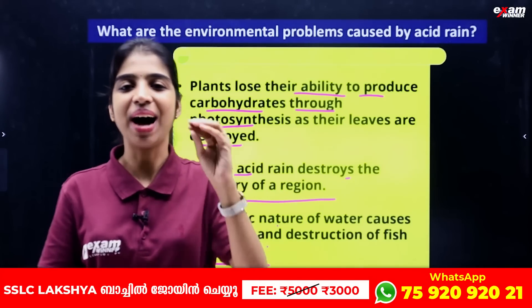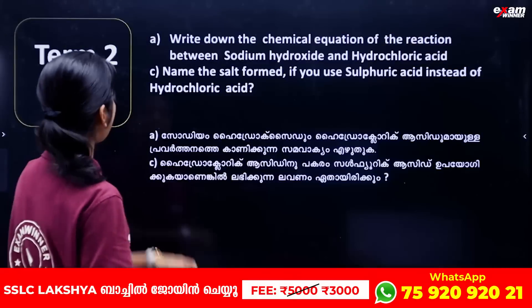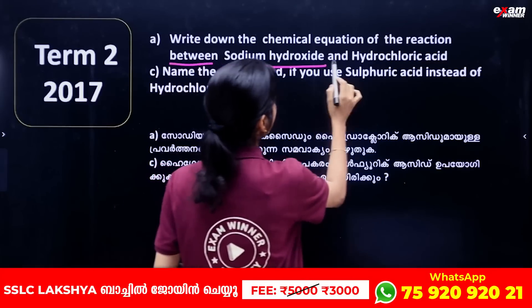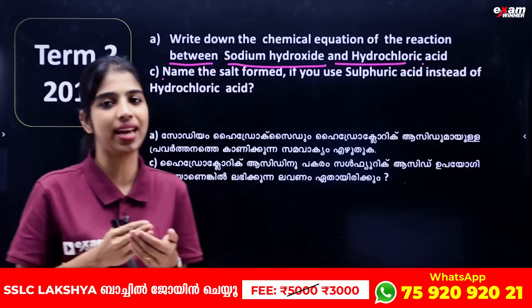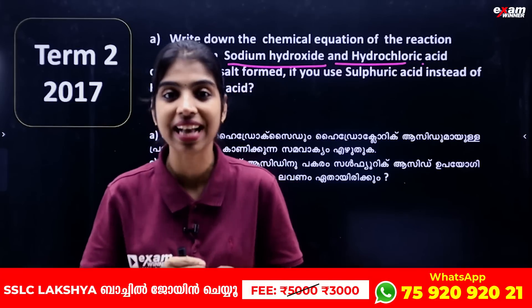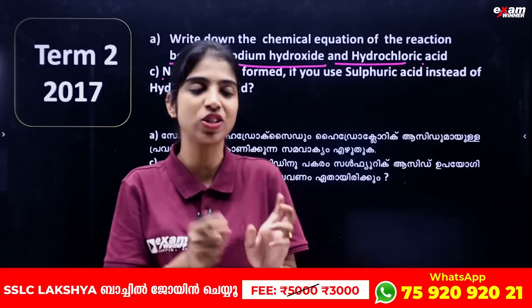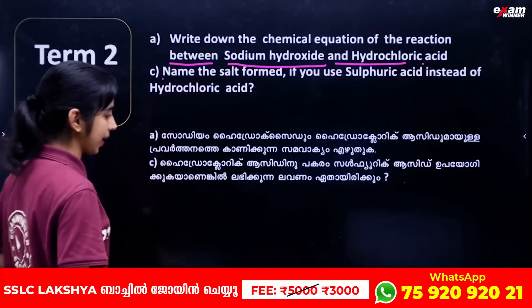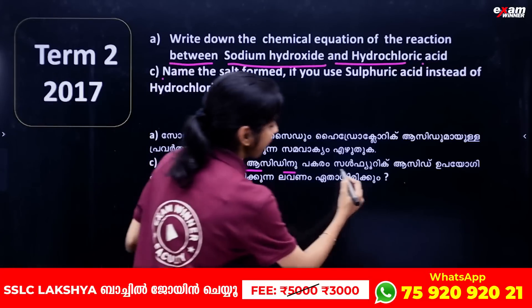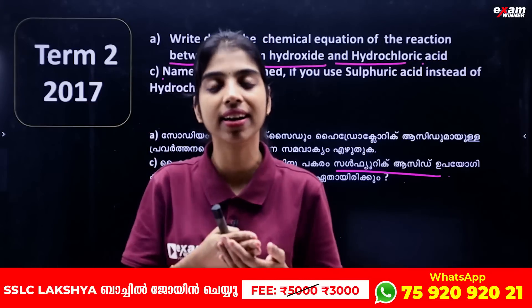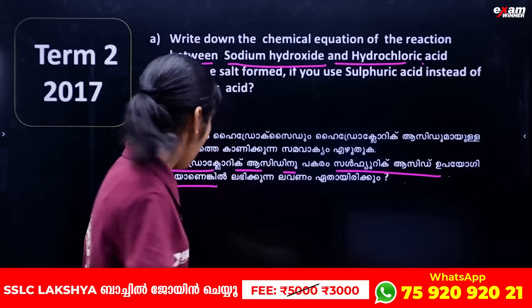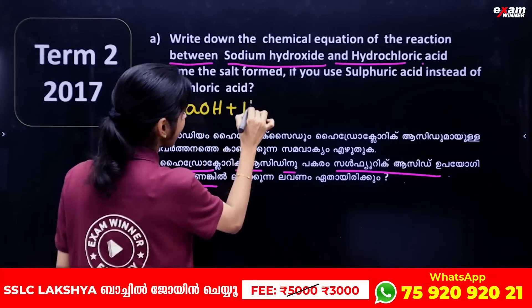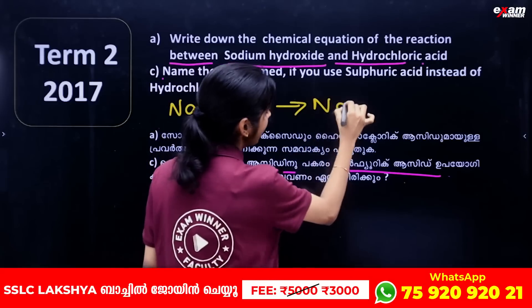Next question: write the chemical equation for the reaction between sodium hydroxide and hydrochloric acid, and name the salt formed. Also give the salt formula if sulfuric acid is used instead of hydrochloric acid. This is a neutralization reaction.